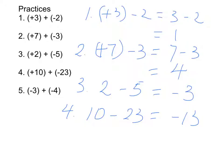For number 5, negative 3 plus negative 4 can be rewritten as negative 3 minus 4, and the result is negative 7. You can try to read more examples in your textbook to see whether you understand. Bye.